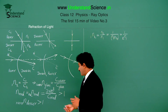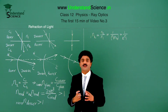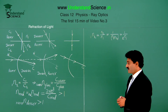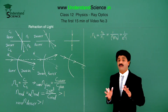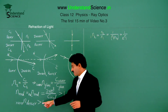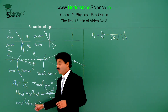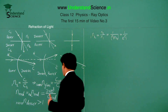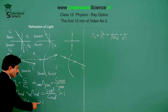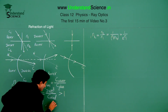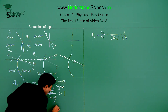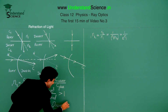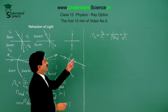The refractive index of medium 2 with respect to 1 is the reciprocal of the refractive index of medium 1 with respect to 2. What does it mean? If the refractive index is 2, then when you take its reciprocal it is 1/2, which is less than 1. That is why in general you cannot say the refractive index will always be greater than 1. The refractive index of a denser medium with respect to rarer is always greater than 1, but taking its reciprocal gives the rarer with respect to denser, which is less than 1.